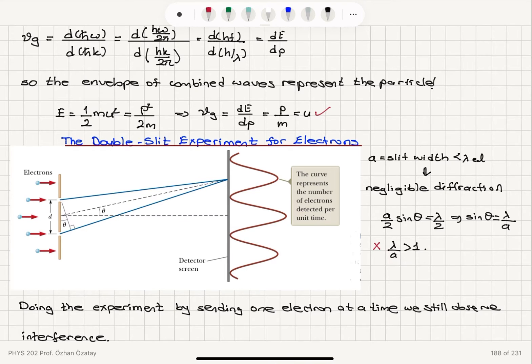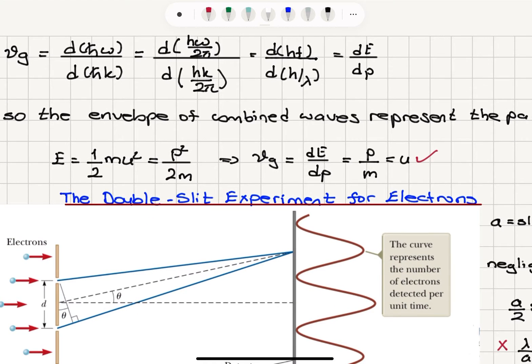Now if we take this d omega dk and multiply it by h bar, we get h omega over 2 pi divided by hk over 2 pi because h over 2 pi is h bar.